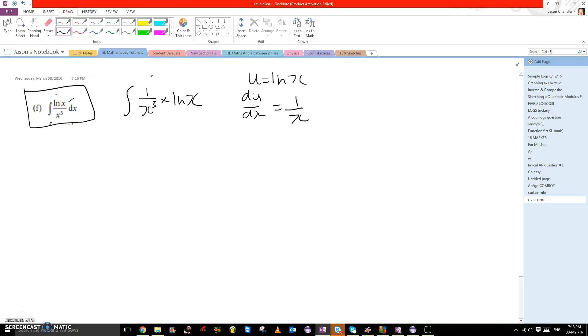Since this is integration by parts, we know that since this is u, this must be dv/dx. So dv/dx is 1 over x cubed, or x to the power of negative 3.